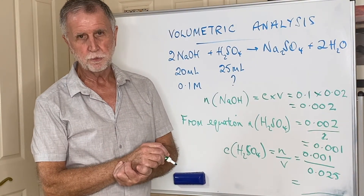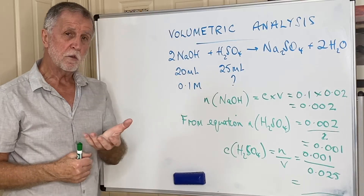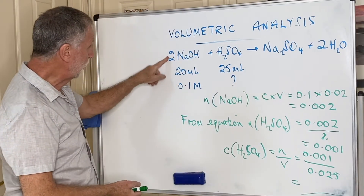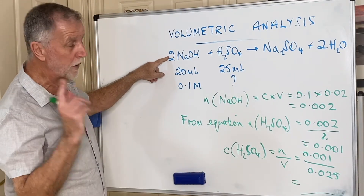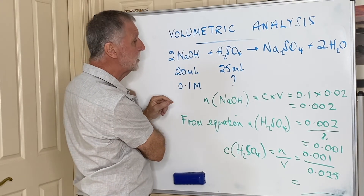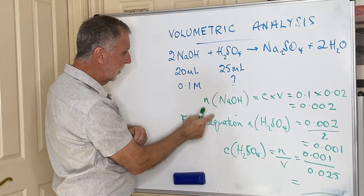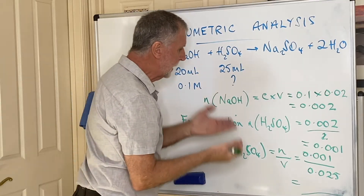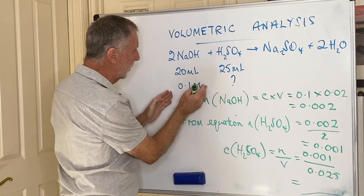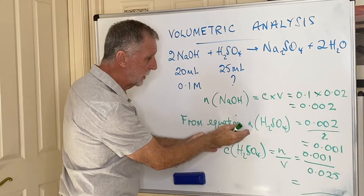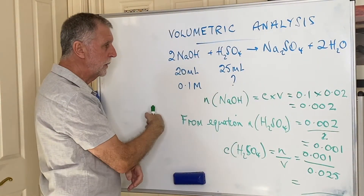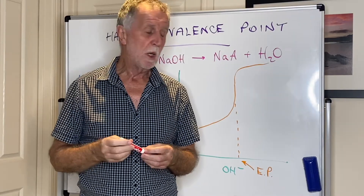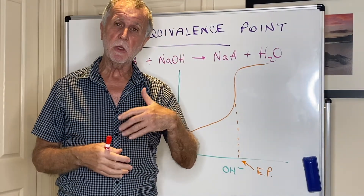If you're doing one of these calculations, follow that step-by-step approach: Step 1 — write the balanced chemical equation. Step 2 — work out the moles of the given substance. Step 3 — use the moles together with the stoichiometric ratio to get moles of the other substance. Step 4 — use that information to work out whatever the question asks.